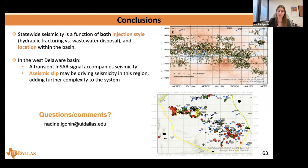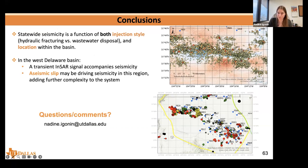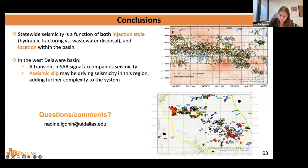In conclusion, statewide seismicity in Texas is a function both of injection style — wastewater injection versus hydraulic fracturing — and location within the basin. In the West Delaware Basin, we have this really interesting transient InSAR signal accompanying seismicity that may be indicative of aseismic slip. With that, I'll stop and I'm happy to take any questions.